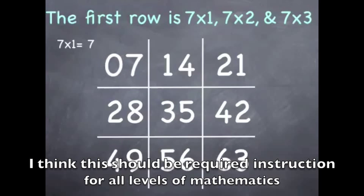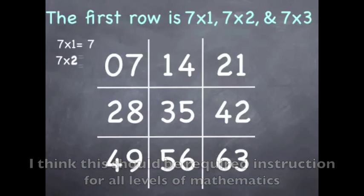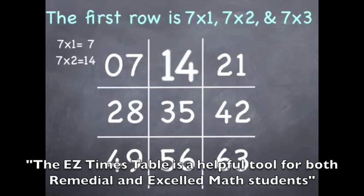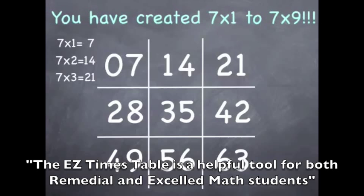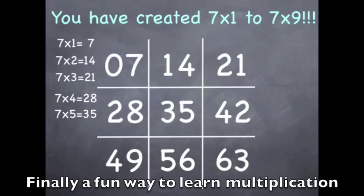Seven times one is seven. Seven times two is 14. Seven times three is 21. Seven times four is 28. Seven times five, burning up, is 35. And seven times six is 42.